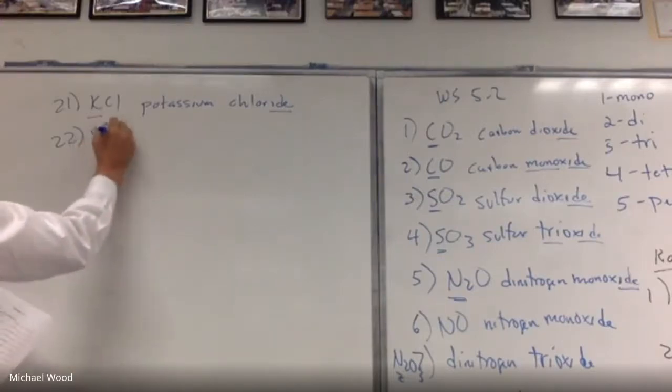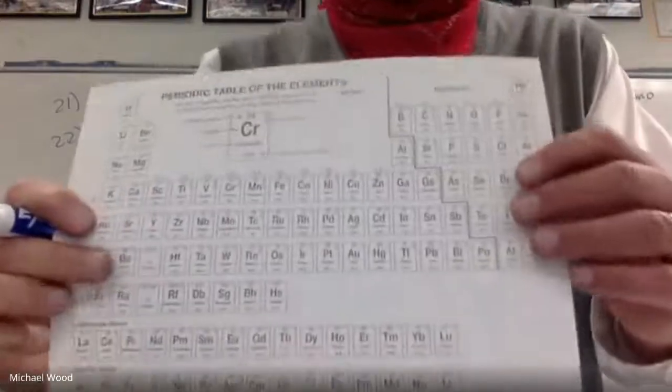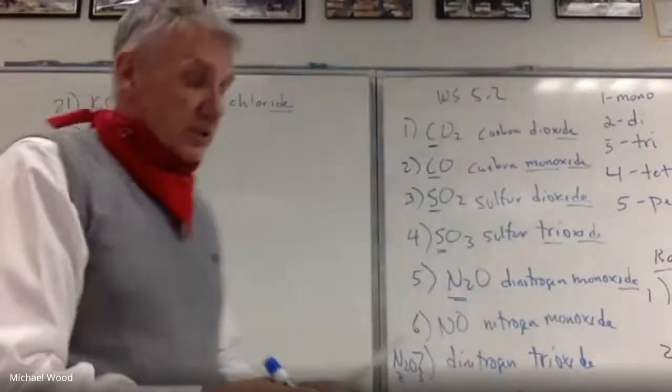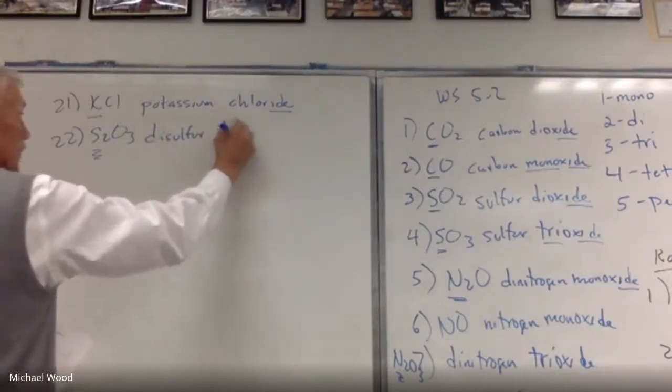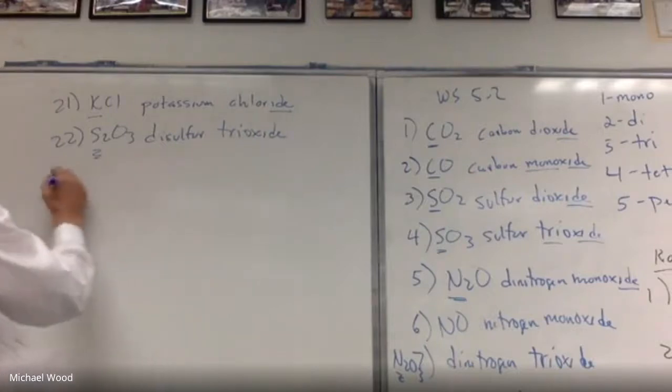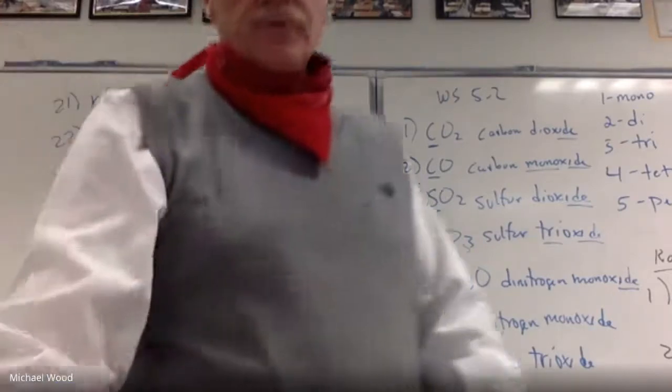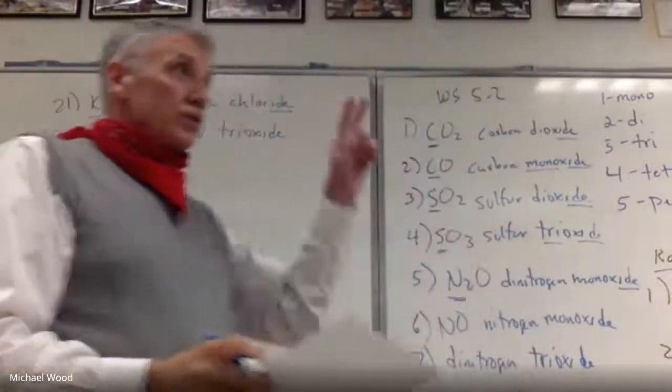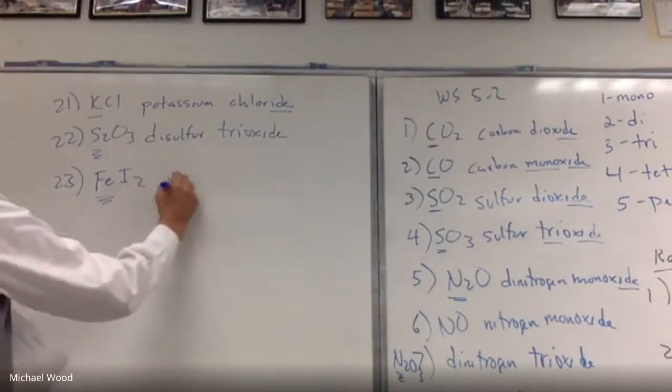So number 22, S2O3. I look up sulfur on the periodic table. Sulfur is way over here, which means it's a type 3. It's a non-metal. So this is where I use prefixes. So I have disulfur trioxide. Number 23, FeI2. I locate iron on the periodic table. And iron is right here, which is a type 2. It's not one of those two columns or that diagonal zinc silver for type 1. It's not a non-metal. So this is a Roman numeral. This is the trickiest thing.